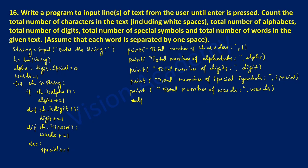Now let us check the output with a dry run. Once we execute the program it will ask the user to enter the string. For example I am going to enter 'hello world @1,2,3'. Now we can calculate the length of the string using l = len(string). Counting each character including the blank space: h, e, l, l, o, space, w, o, r, l, d, @, 1, 2, 3 — there are 15 characters in total. So 15 will be initialized to the variable l.